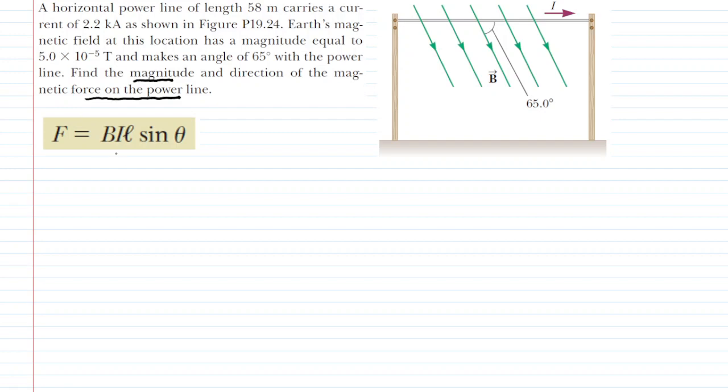We need four pieces of information. We're going to need the magnetic field strength B, we're going to need the current I, the length of the wire, and then the angle between the direction of the current and the direction of the magnetic field.